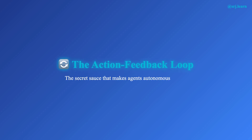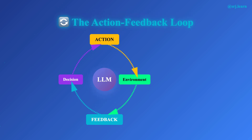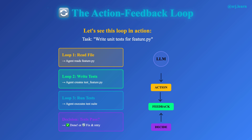Let's examine the action feedback loop in detail using a real example. Imagine you're in an AI-powered code editor like Cursor and you ask the agent: 'Write unit tests for my feature.py file.' Loop 1: the agent reads feature.py — that's the action, and the file's contents are the feedback. Now the agent knows what functions need testing. Loop 2: the agent writes the tests to a new file. Writing the file is the action, and the written code is the feedback. The agent can now see what it created.